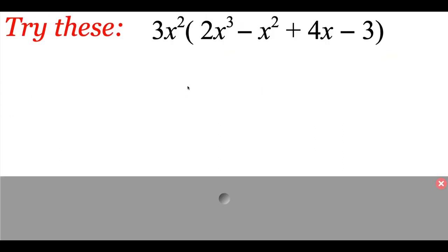Taking a look at this example, I'm supposed to multiply 3x squared times 2x cubed minus x squared plus 4x minus 3. Again, we're going to use our distributive property and that product property for exponents. So I'm going to take the 3x squared times the 2x cubed. 3 times 2 is 6. Then I take x squared times x cubed and add those exponents together, so I get x to the 5th. Then I take the 3x squared and multiply it to the negative x squared.